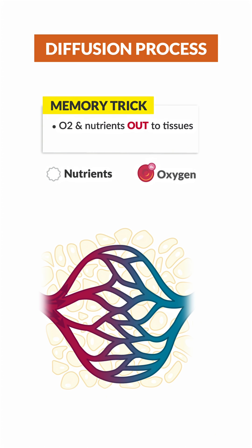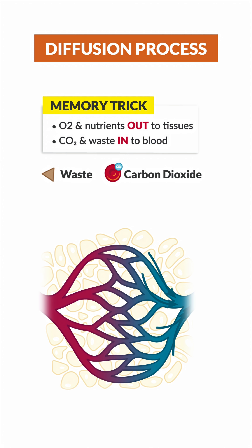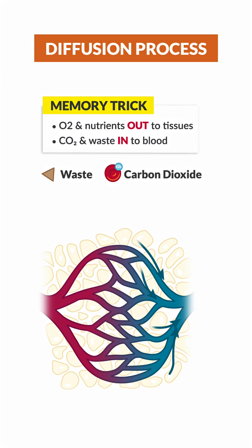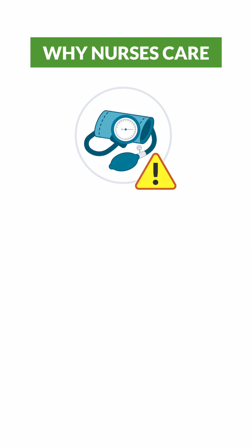Oxygen and nutrients move from the capillaries into nearby cells, while carbon dioxide — that's CO2 — and other waste products move out of the tissues and into the bloodstream to be carried away, or what I like to say, from the body and into the potty. So understanding these layers helps you manage conditions like hypertension,